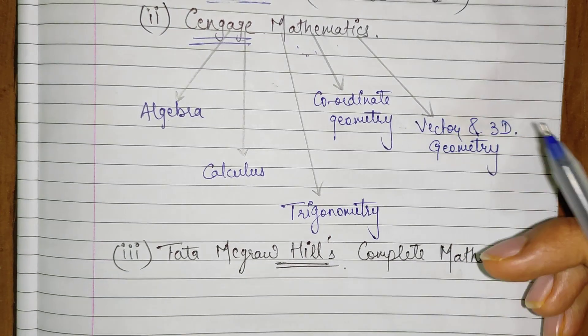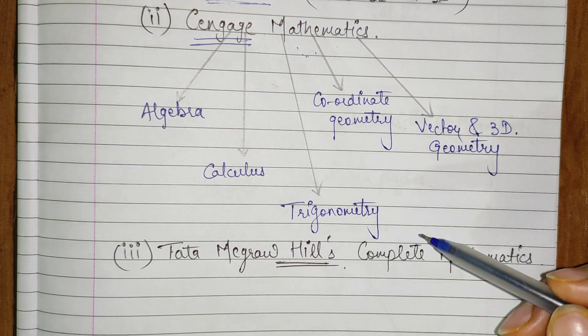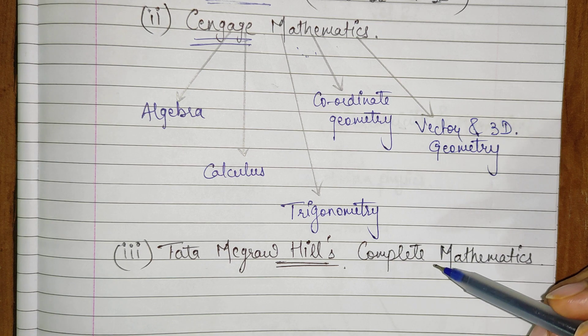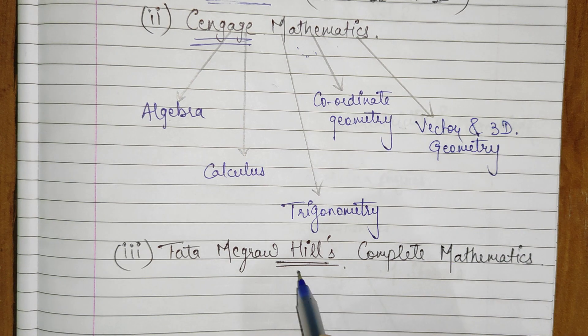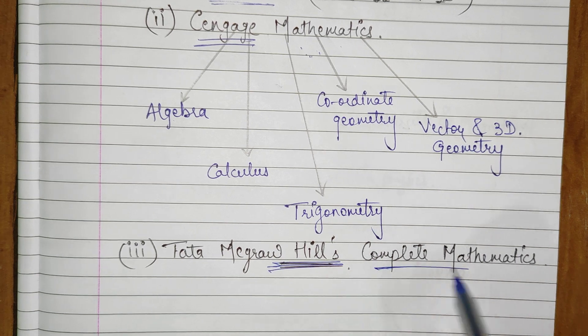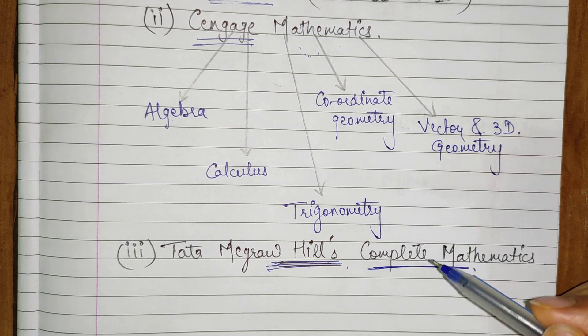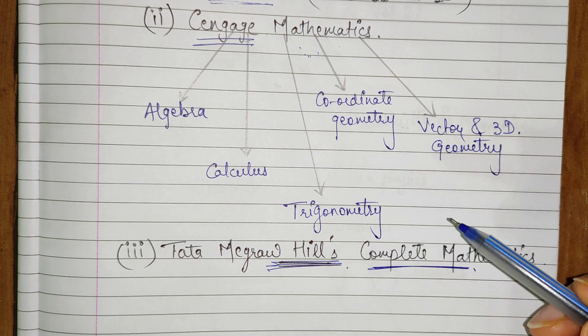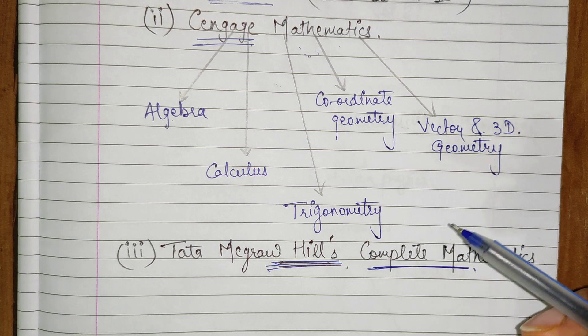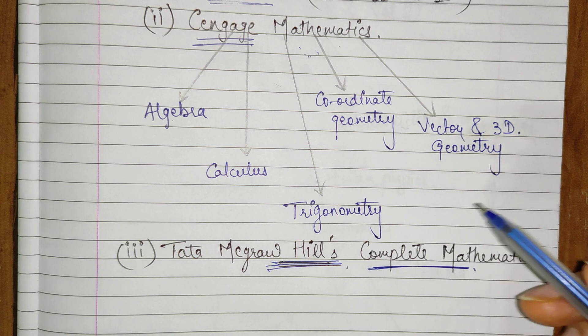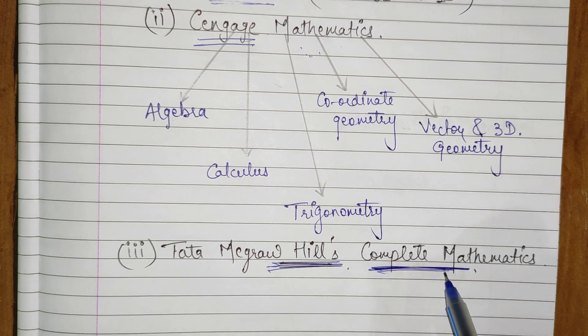But what if you are currently in class 12th? So if you are currently in class 12th, what you could do is solve Tata McGraw Hill's complete mathematics book. This book does not have a very detailed theory but it surely has a good amount of questions that you can solve so that your preparation gets fully channeled.